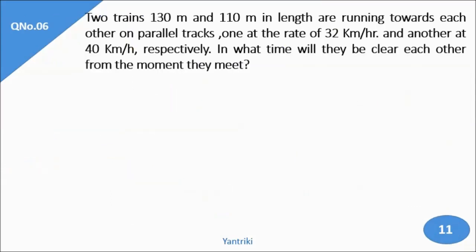Now let us start question number 6: two trains of 130 meters and 110 meters — so L1 is 130 meters and L2 is 110 meters — are running towards each other on parallel tracks. So I have one train moving in one direction and on the parallel track another train moving towards it. The first train has length 130 meters and the second has 110 meters.